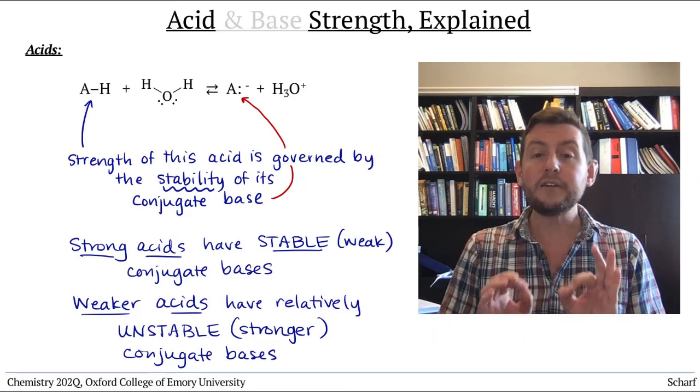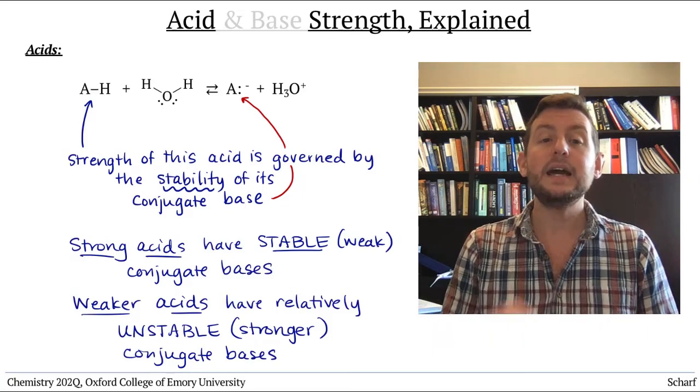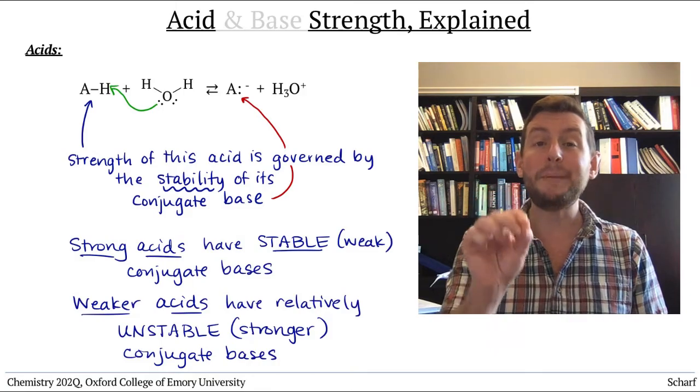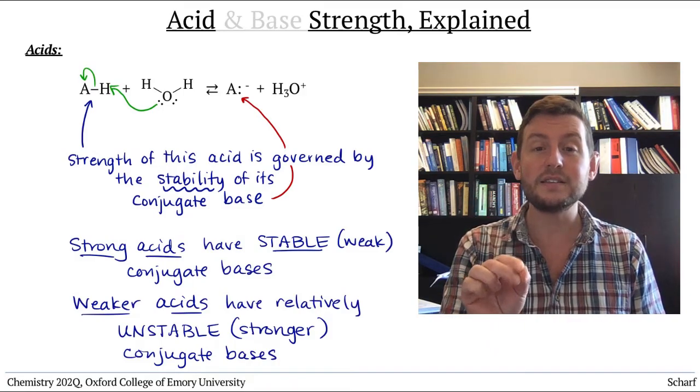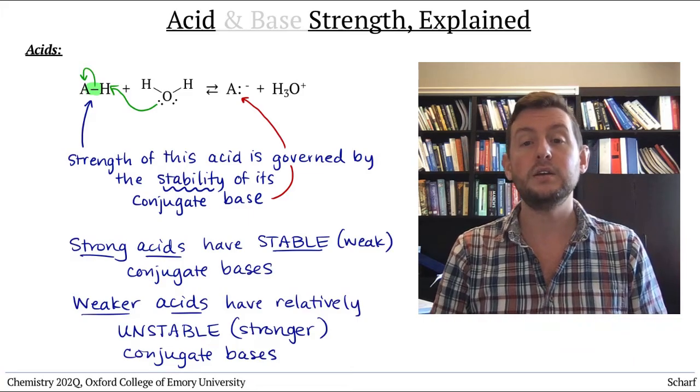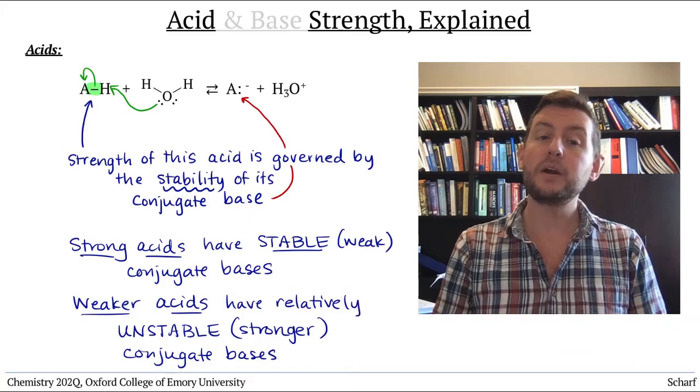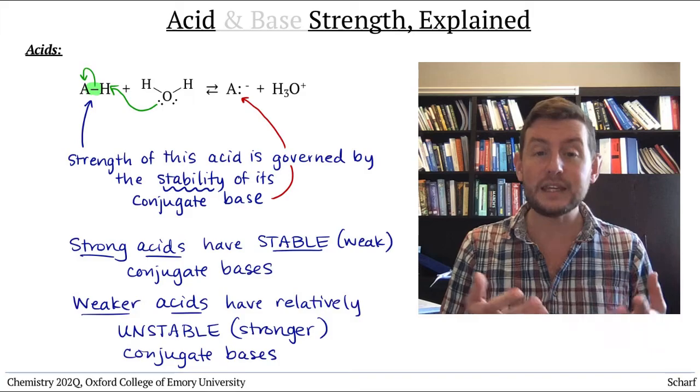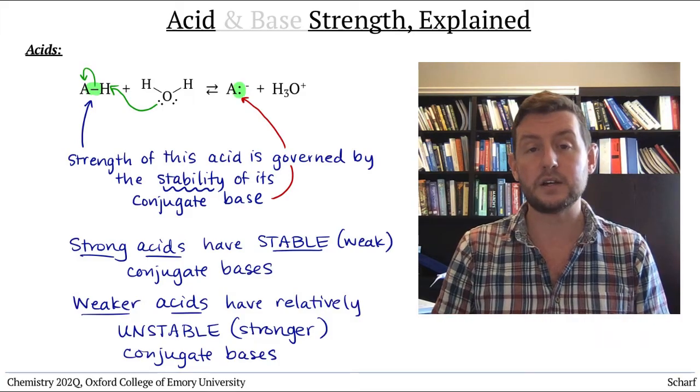Specifically, the strength of an acid is dictated by the stability of the pair of electrons that were holding the acidic proton to the acid. The pair of electrons that end up as these electrons in the conjugate base.